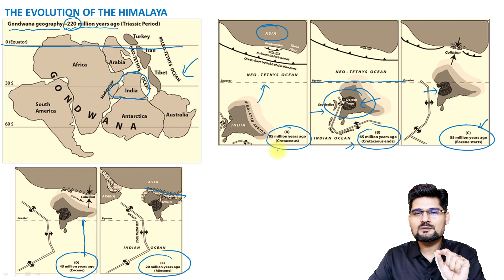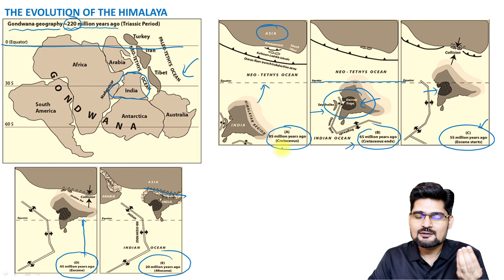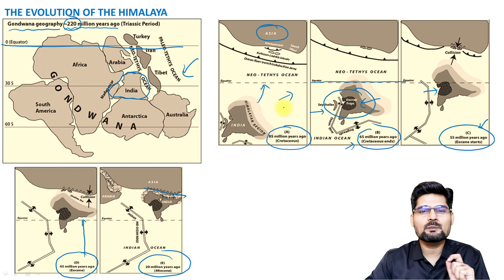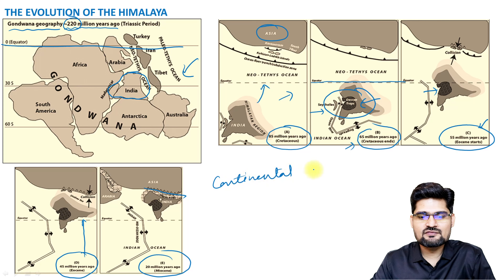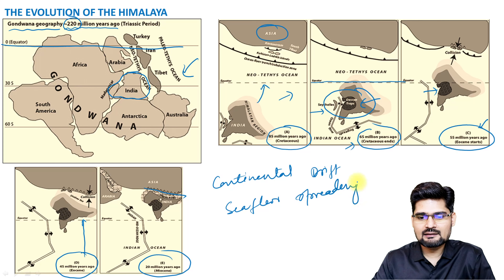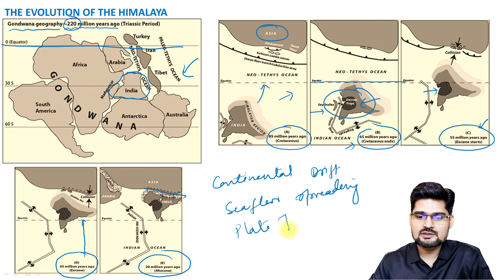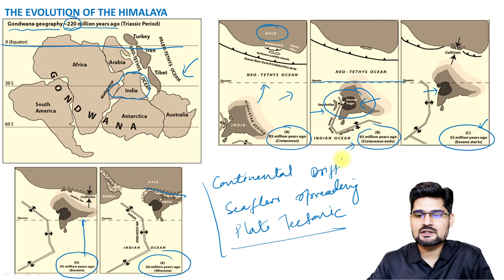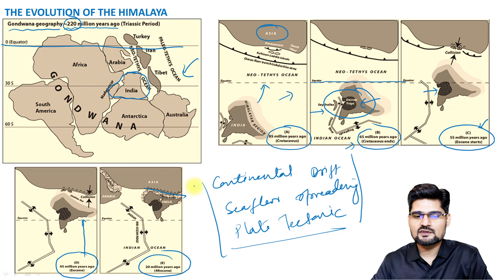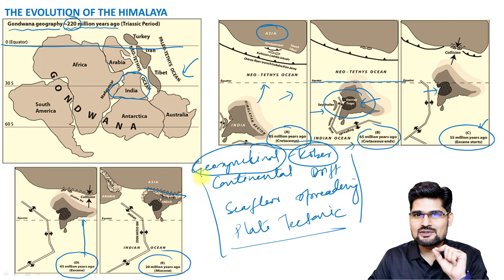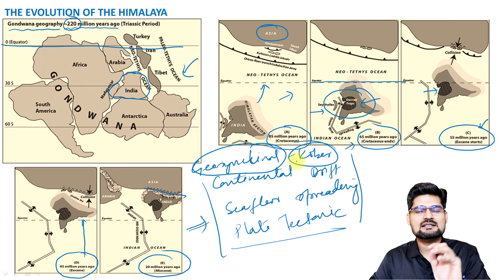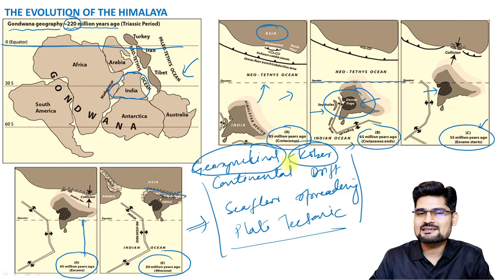By 20 million years ago, the Miocene, we observe the full collision. Plate tectonics is the responsible theory here — we talk about Continental Drift Theory, Seafloor Spreading Theory, and Plate Tectonic Theory. There is also the Geosynclinal Theory of Kober and others, which gives the idea of orogeny or mountain formation. These theories have already been discussed in the geomorphology playlist, so let's look directly into the process.